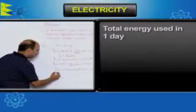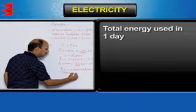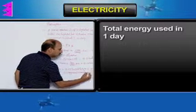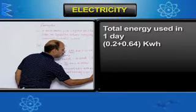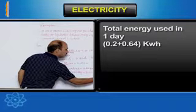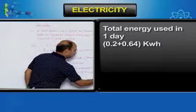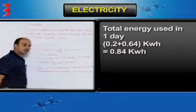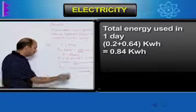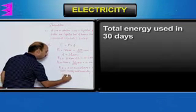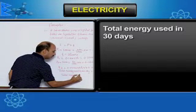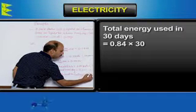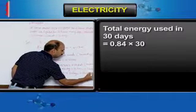Total energy used in one day is equal to 0.2 plus 0.64 kilowatt hour, which equals 0.84 kilowatt hour. Now we calculate for 30 days: total energy in 30 days is equal to 0.84 multiplied by 30.